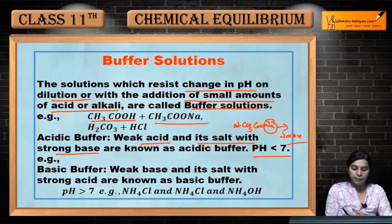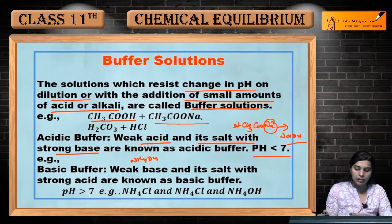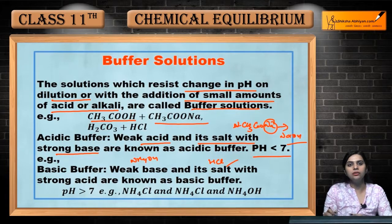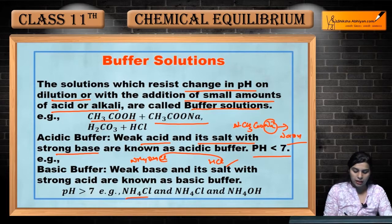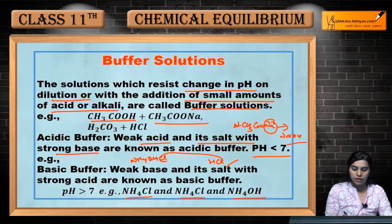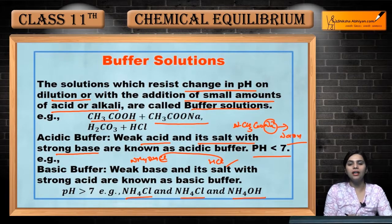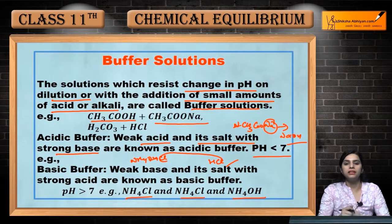Basic buffer is a weak base. If we take Ammonium Hydroxide (NH4OH) and its salt with a strong acid, these are known as basic buffer. The common example is Ammonium Chloride (NH4Cl) with NH4OH. Weak base and its salt with strong acid are known as basic buffer, and its pH will be greater than 7.